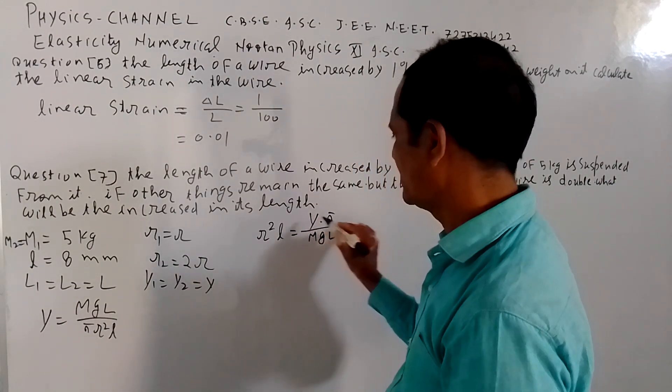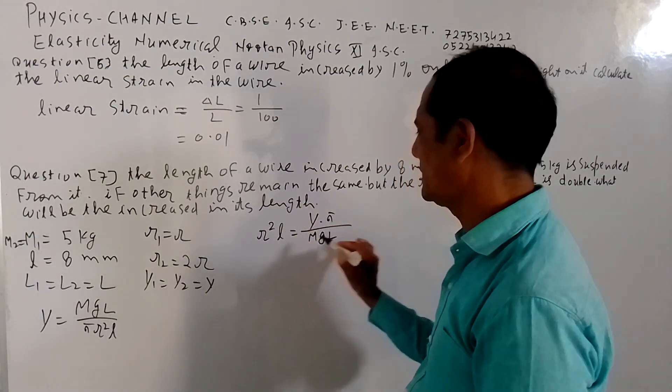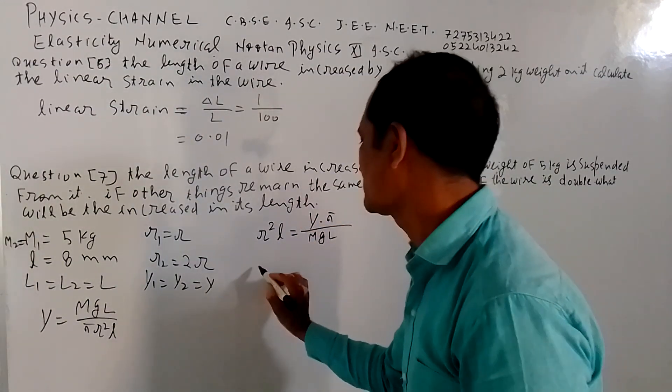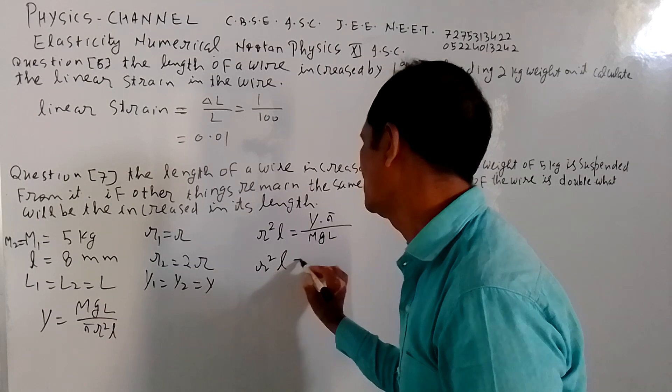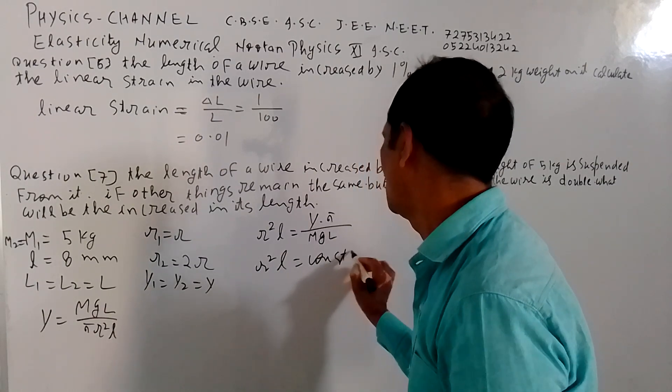Other parameters are the same with this. This is constant: R squared into L is constant. Now we will evaluate.